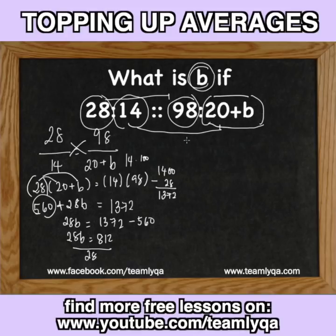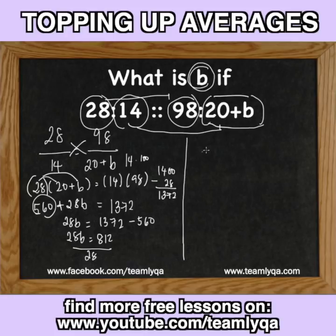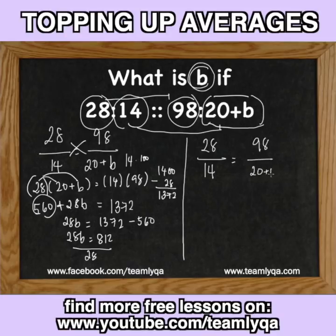Let's try the other method — there's a technique I call ratio rotation. The video for that will be linked in the description box or in the comments if you're watching on YouTube or Facebook. That would be a good lesson to learn because it can be faster. So, 28 over 14 is equal to 98 over 20 plus B. What we're looking for is just what number to add to 20 to get the right value. We do the rotation method, but a good thing to do first is reduce to the smallest terms.